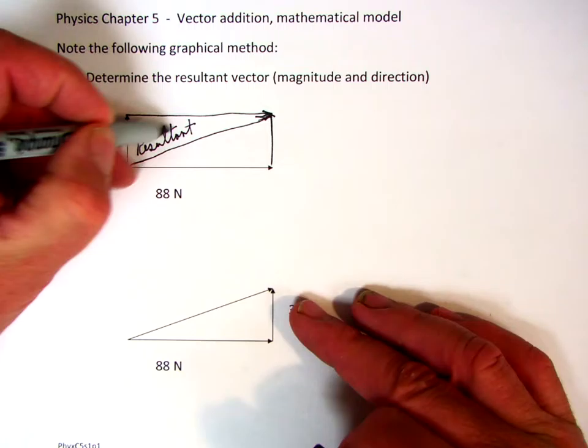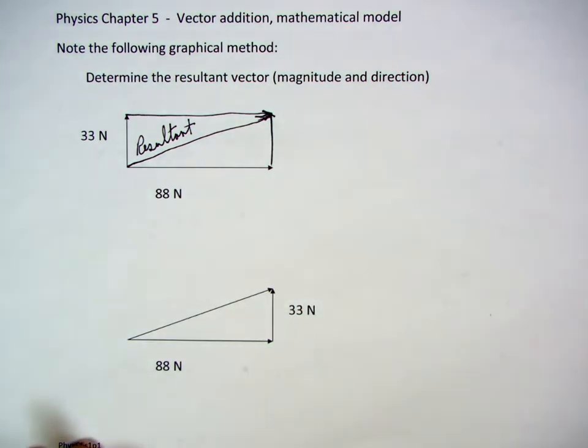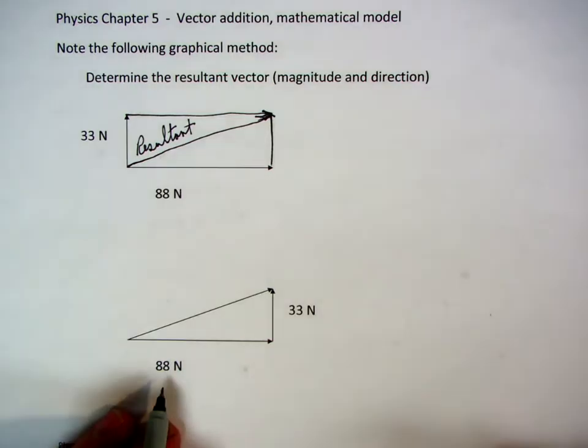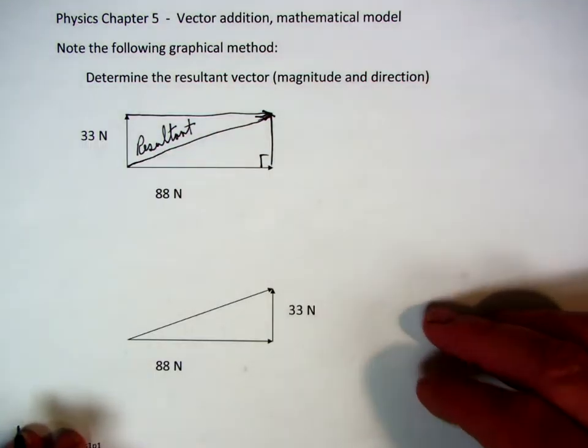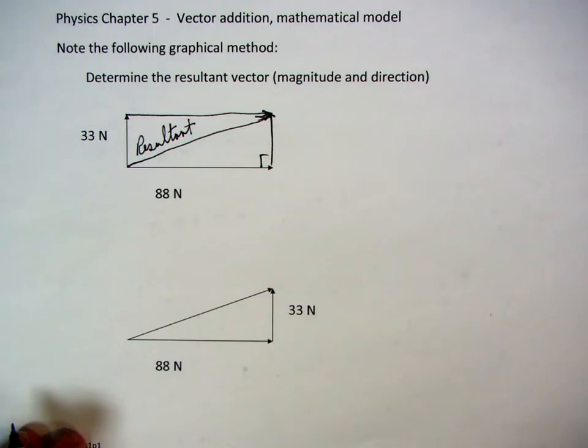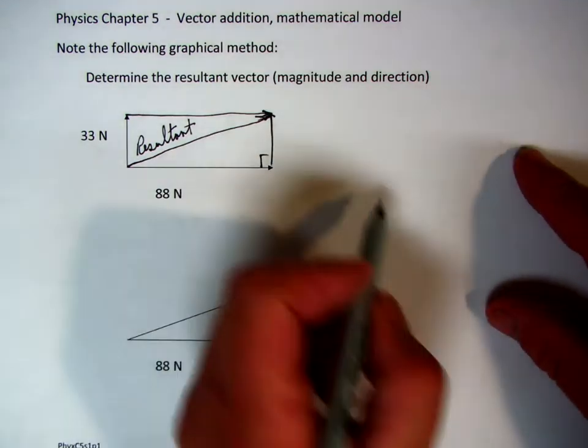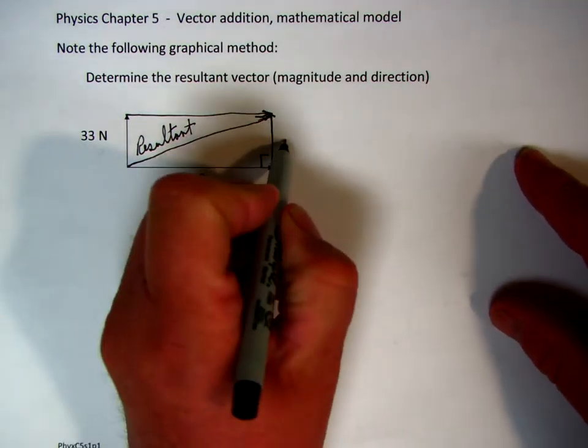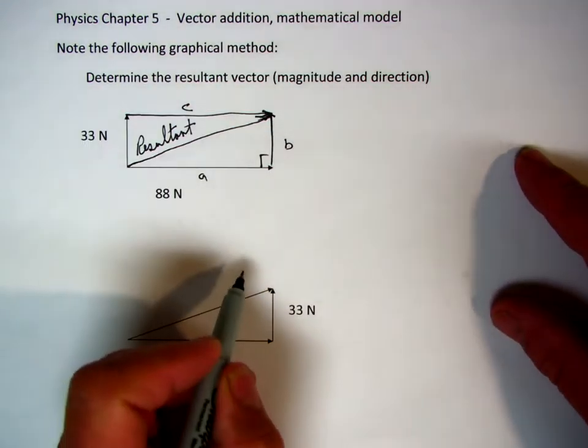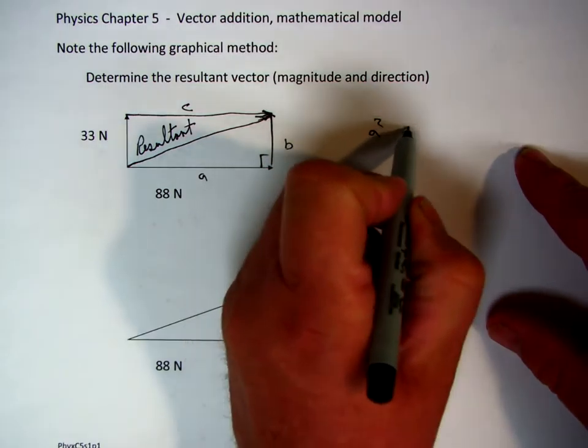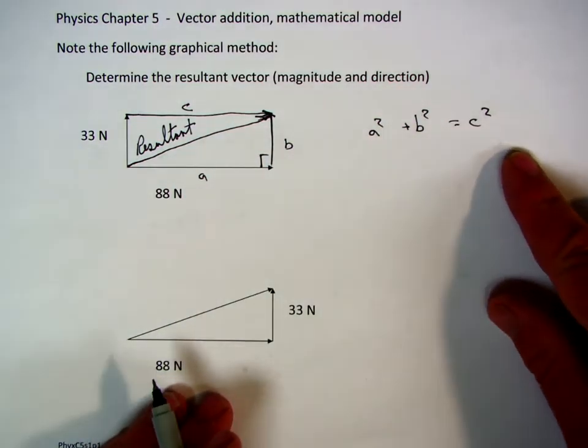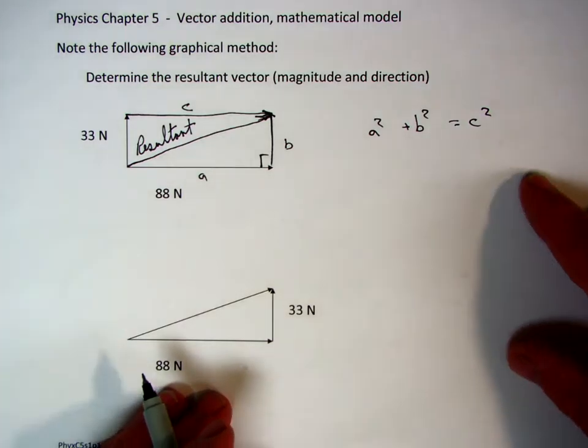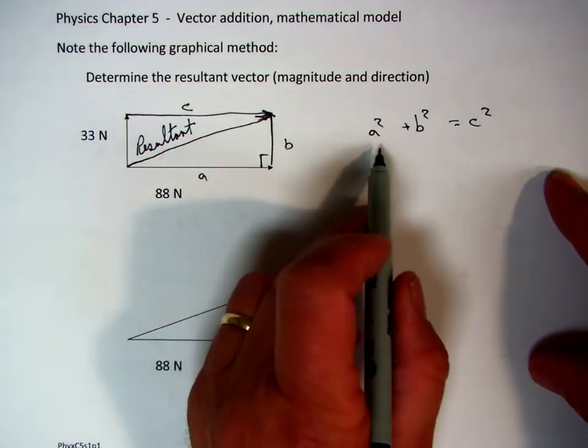And the resultant has a magnitude and it has a direction. How do we calculate the magnitude? You'll notice if you've got a right angle right here. We can calculate the magnitude of the resultant by a squared plus b squared equals c squared. Pythagorean theorem will allow us to calculate the magnitude of this.